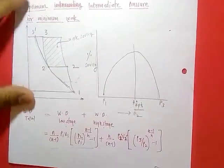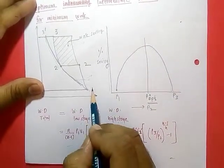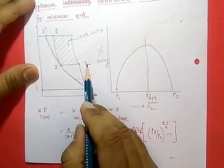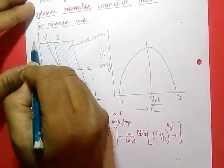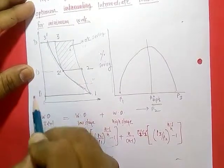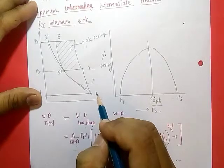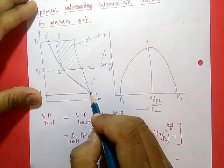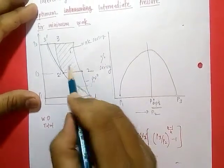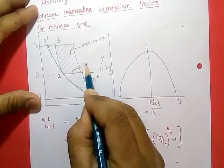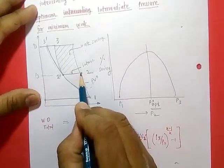Consider there is a two-stage compressor. p1 is the suction pressure, p2 is the intermediate pressure, and p3 is the delivery pressure. In the first compressor, air enters at pressure p1, volume v1, and temperature t1, then it is compressed by some process. After compression there is an intercooler.